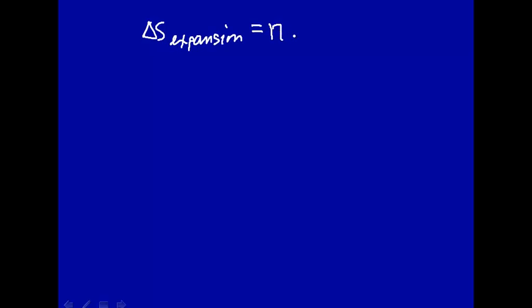That will just be the number of moles - now we have a mixture, argon plus helium - so it will be the total number of moles times R times the natural log of the final volume, 20 liters, over the initial volume, 6.5 liters.